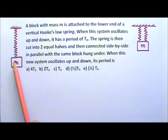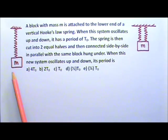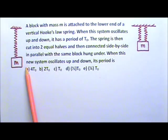A block with mass M is attached to the lower end of a Hooke's law spring. When this system oscillates up and down, it has a period of T0.